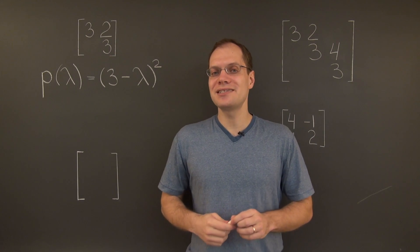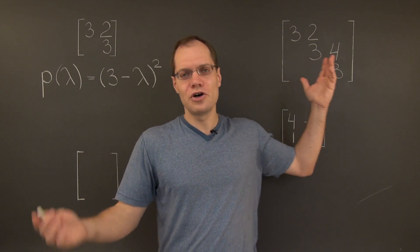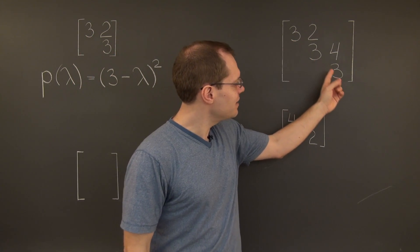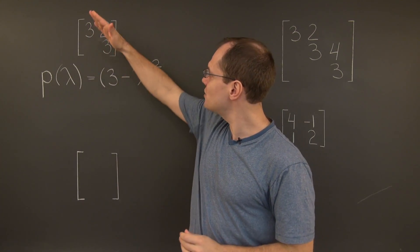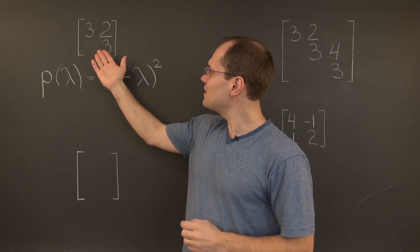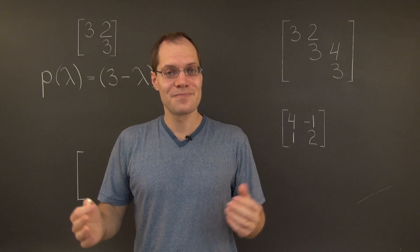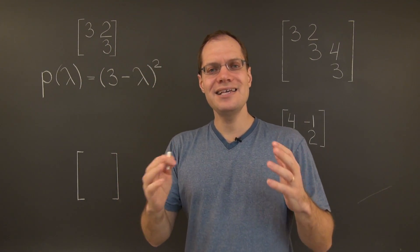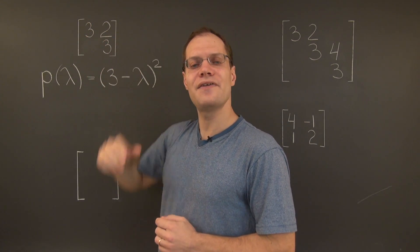Here is what quintessential defective matrices look like. They're upper or lower triangular matrices, with two or more of the same value on the diagonal, in this case 3, and non-zero values on the sub-diagonal.